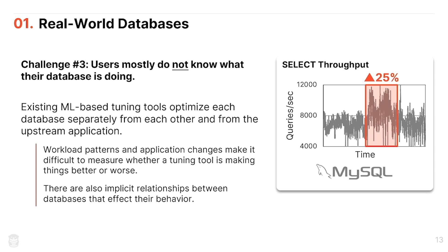Another interesting challenge is that all the ML models treat each database in isolation, but in larger organizations there are actually implicit relationships between databases — sharding, mirroring, staging/production pairs. If you could learn how optimizing one database system affects another, you could speed up the process of producing better recommendations.